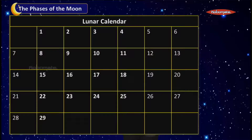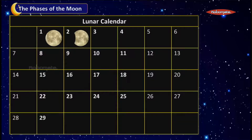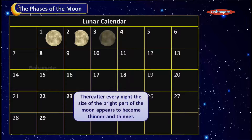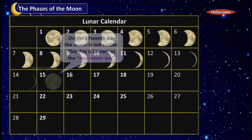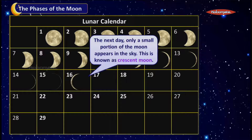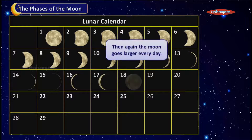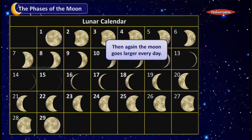Let's understand the phases better using a calendar. On day one it is a full moon. The Moon keeps decreasing in size — waning — becoming thinner and thinner. On day 15, you cannot see the Moon at all — that is the new moon day. Then it begins waxing again, growing larger and larger day by day, until on day 29 we see the full moon once more.